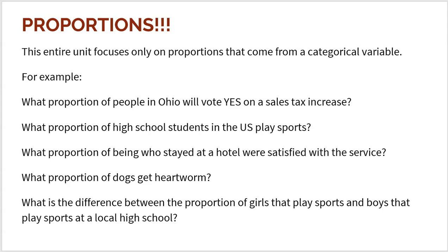This whole unit focuses on nothing but proportions, so let's make sure you understand what proportions are. Proportions come from categorical variables — where the answer to our question is a word that puts you into a category. For example: 'What proportion of people in Ohio will vote yes on a sales tax increase?' Voting yes is a word. The proportion looks at all the yeses out of all voters. Another example: 'What proportion of high school students in the U.S. play sports?' You get a proportion of people that said yes and a proportion that said no.